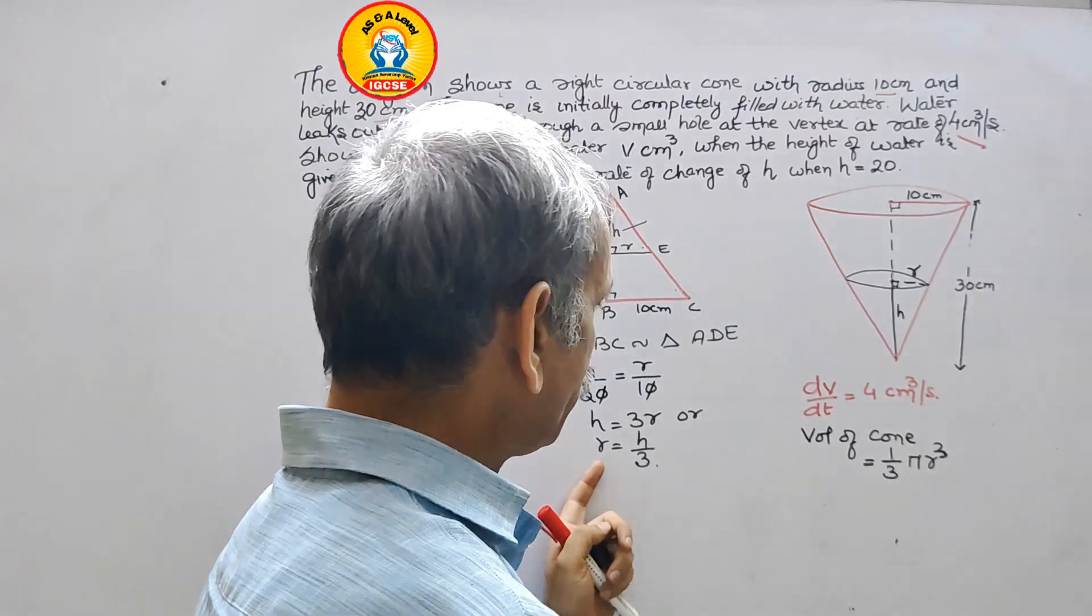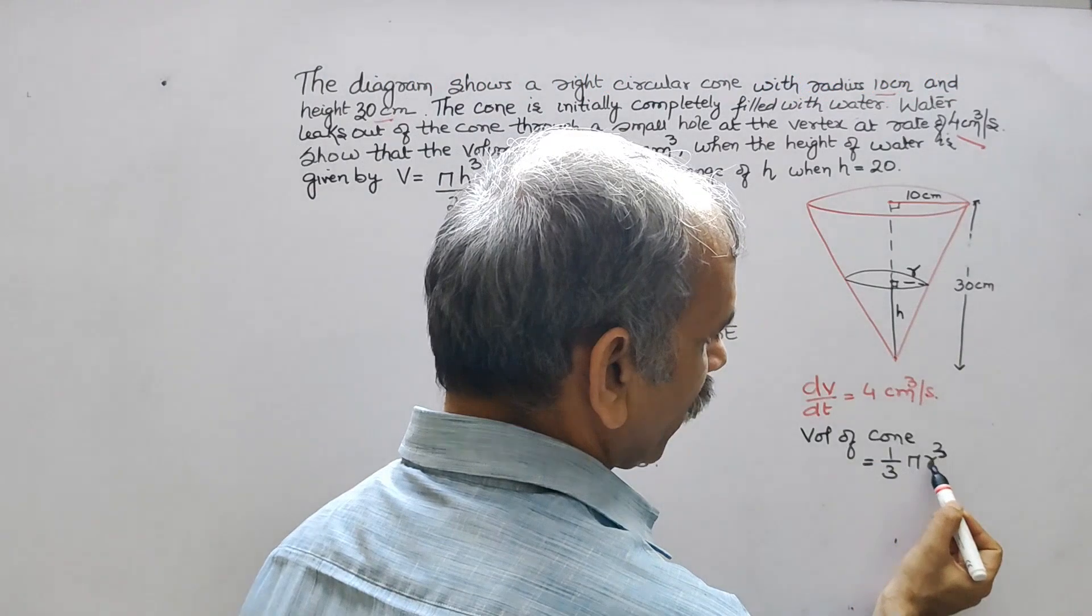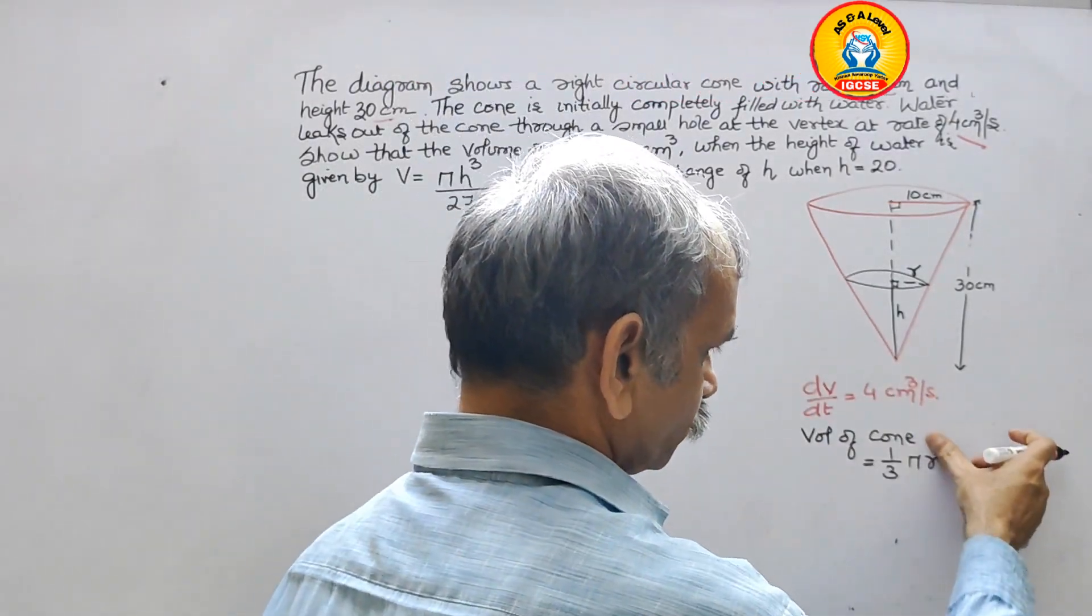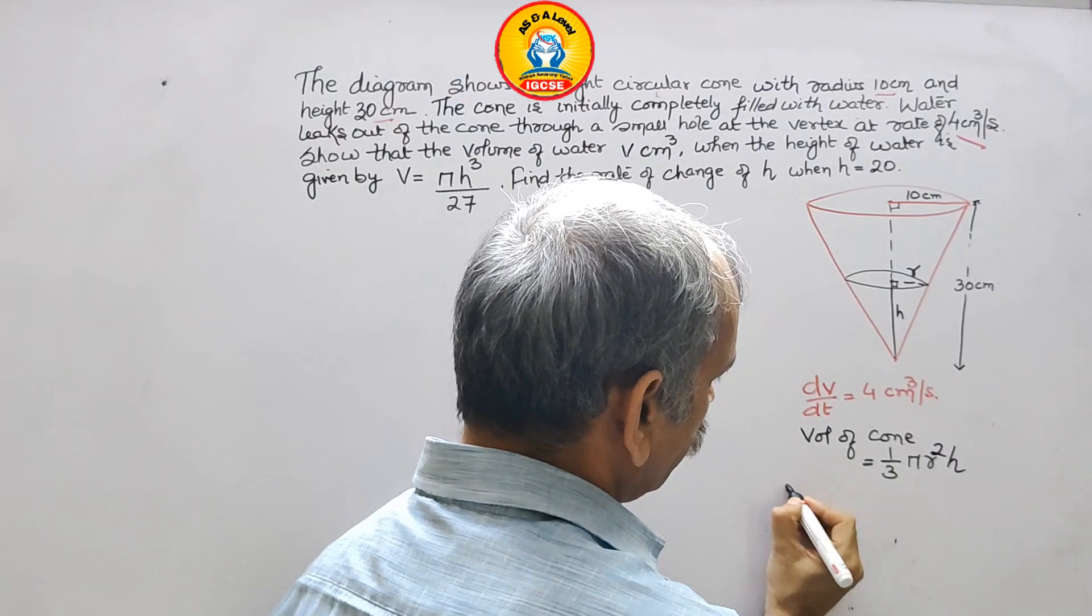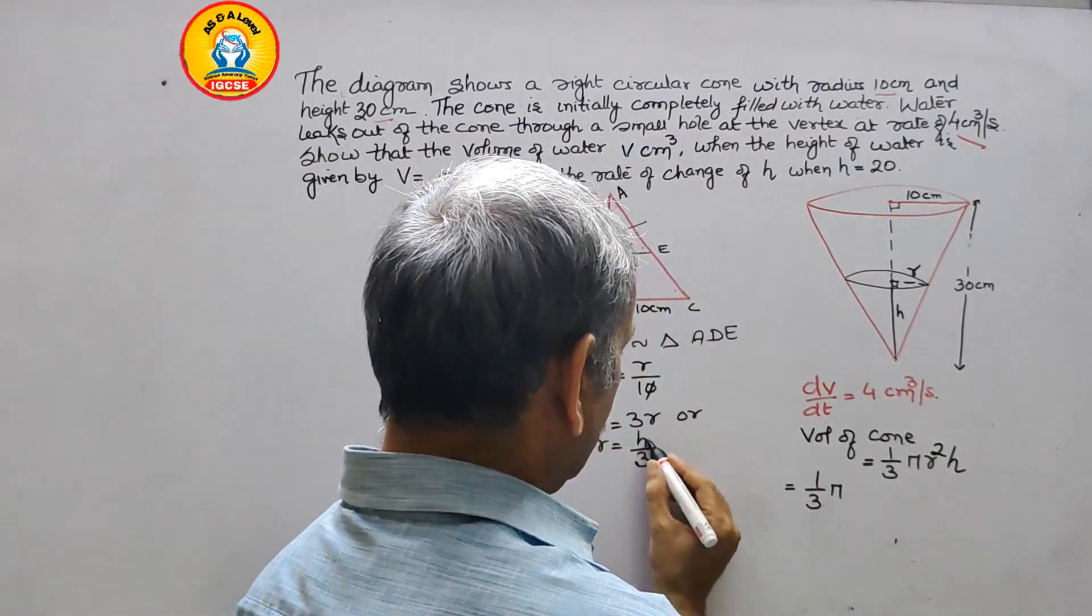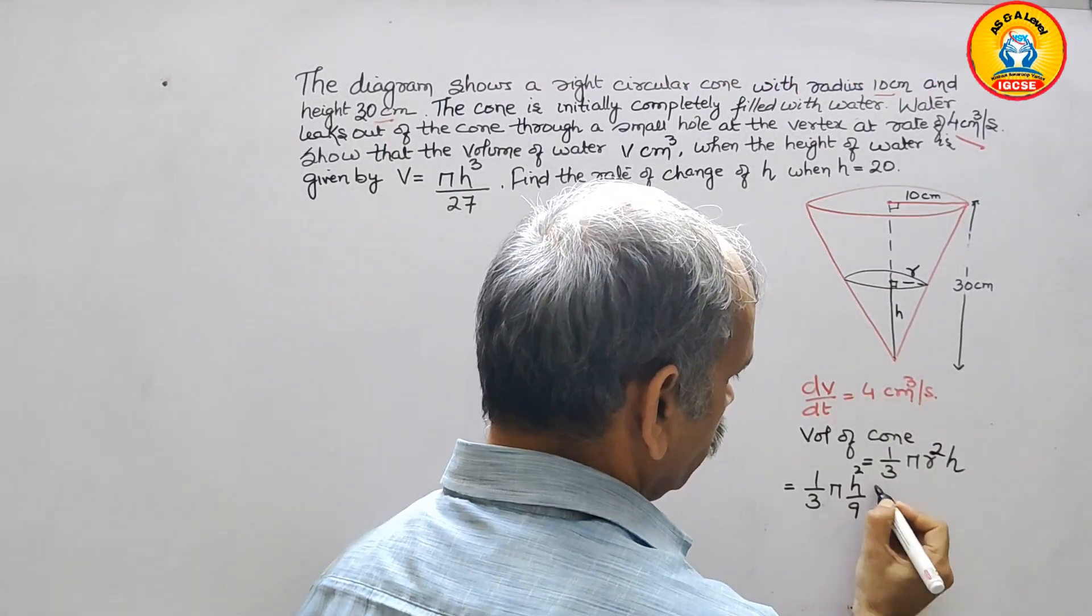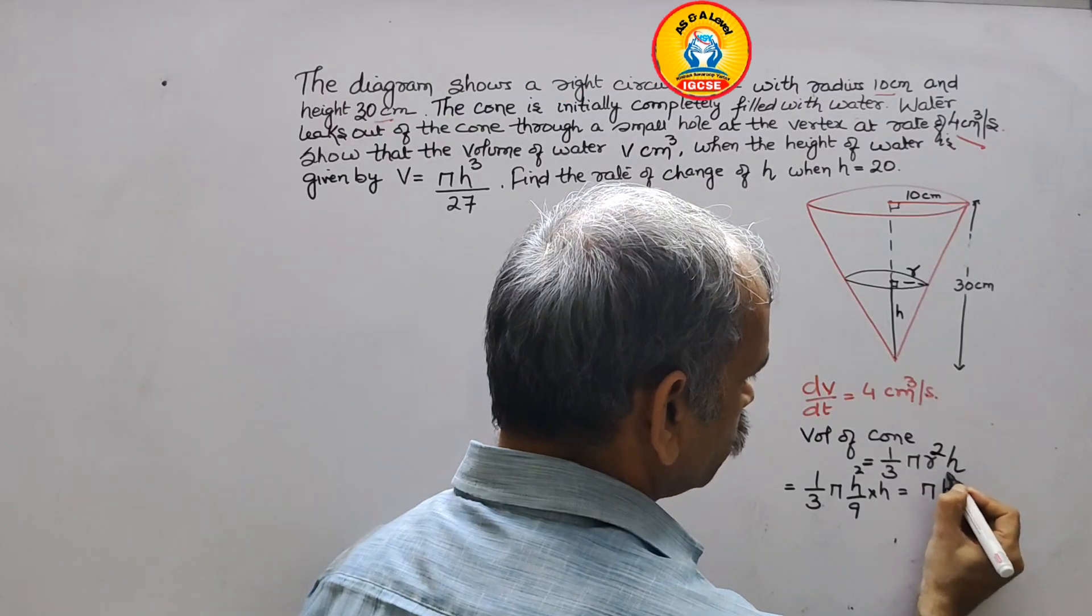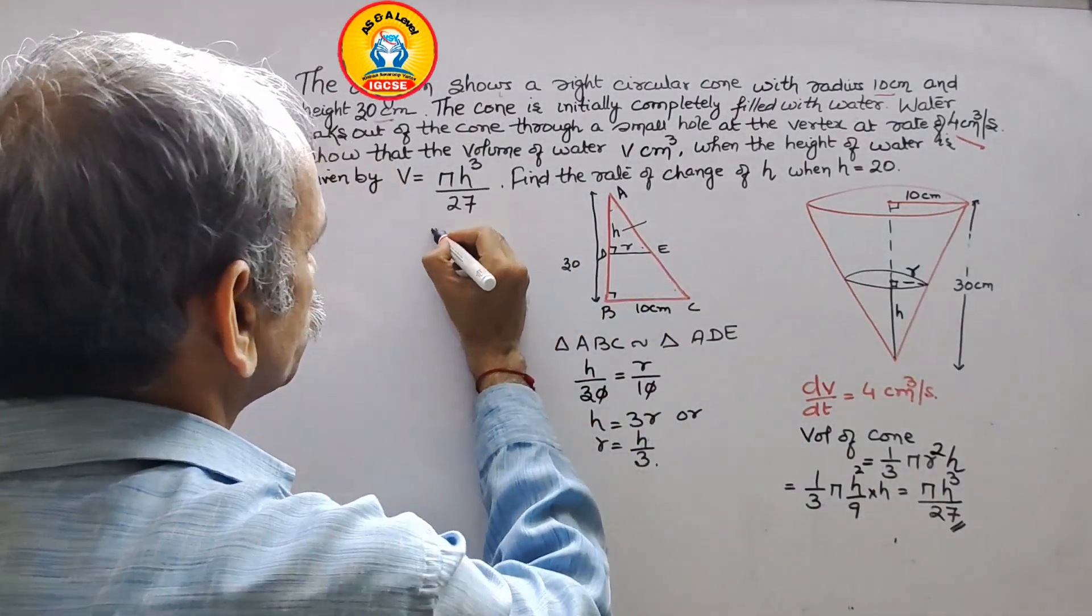Now this r value we have to substitute here. So see that what we have written 1/3 πr²h. Now substitute that value. What we will get? 1/3 π r² is h²/9 into h. That is equal to we can say πh³/27. So this only they have told us to prove.